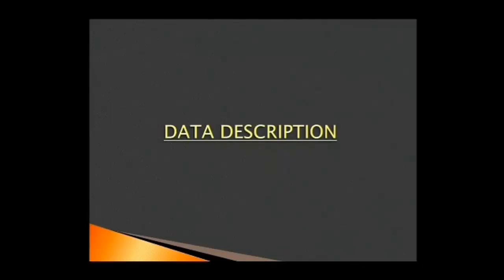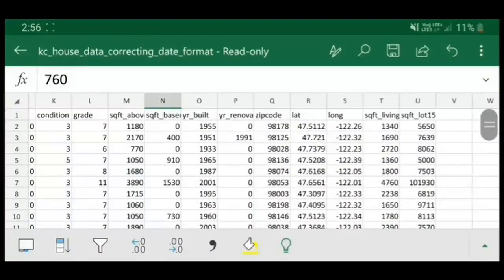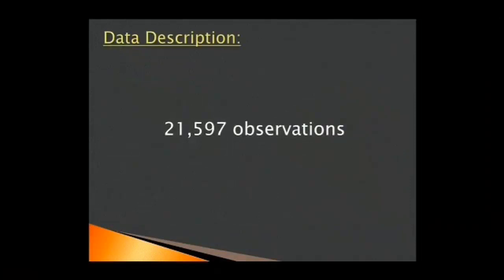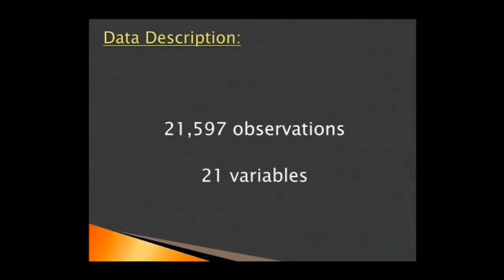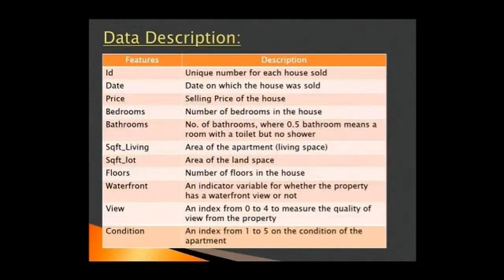Next, we look into the data description. This is the dataset we will be working with. The data contains 21,597 observations with 21 variables. It has no missing data. These are the variables that are included in the dataset. This chart here gives us detailed information about each term used as variables in the dataset.